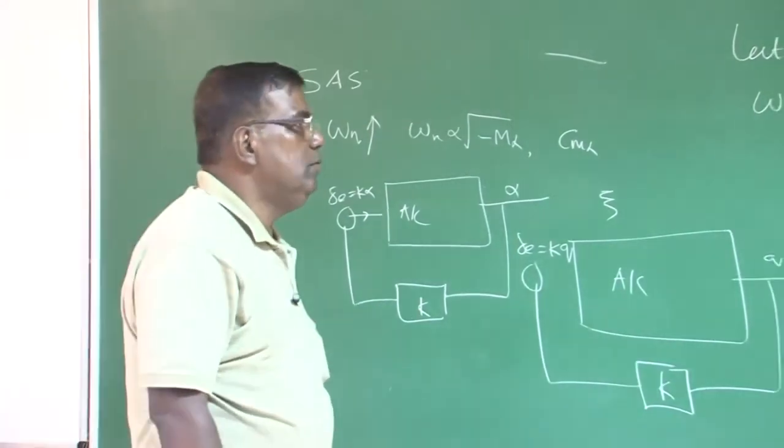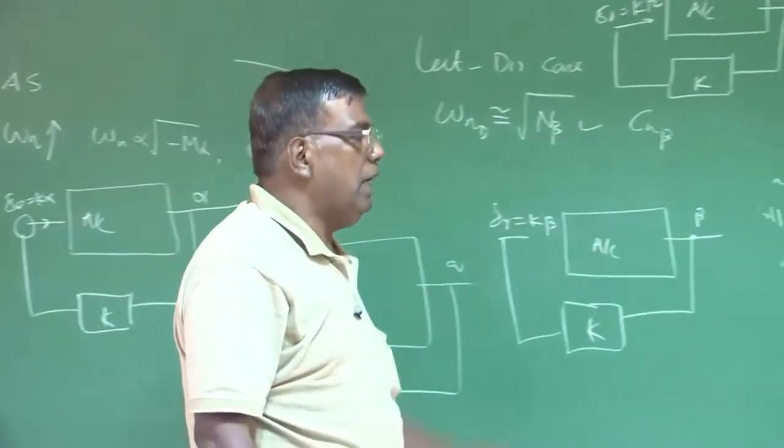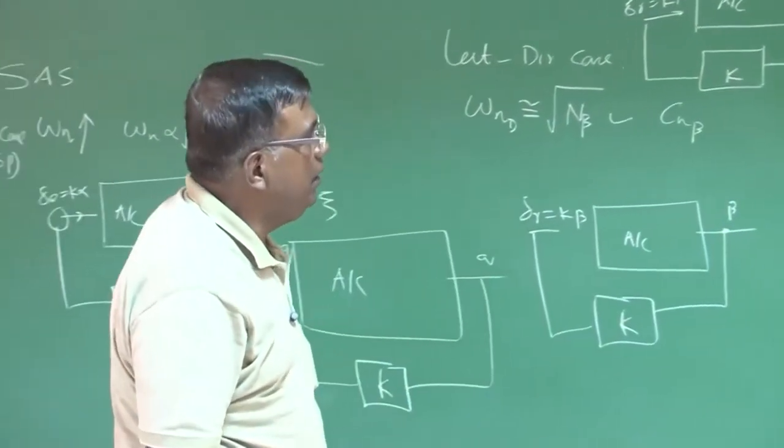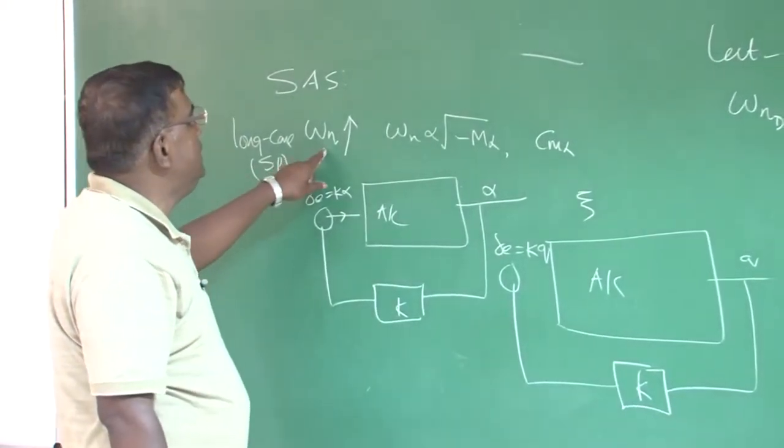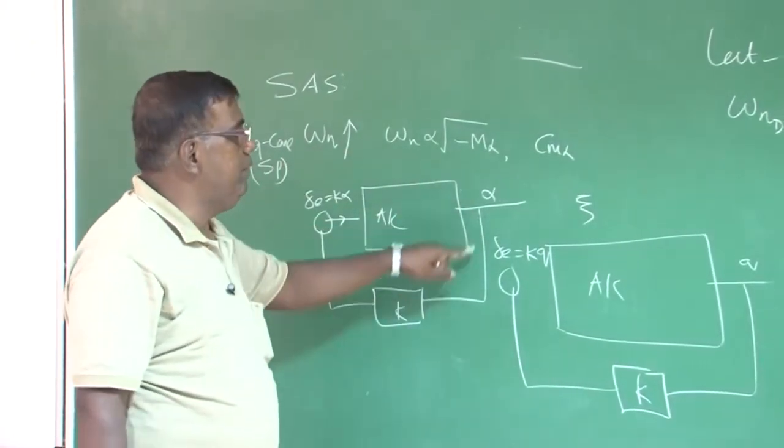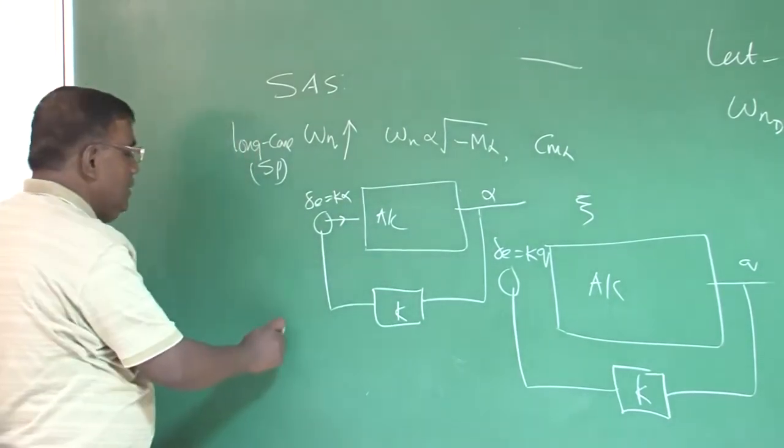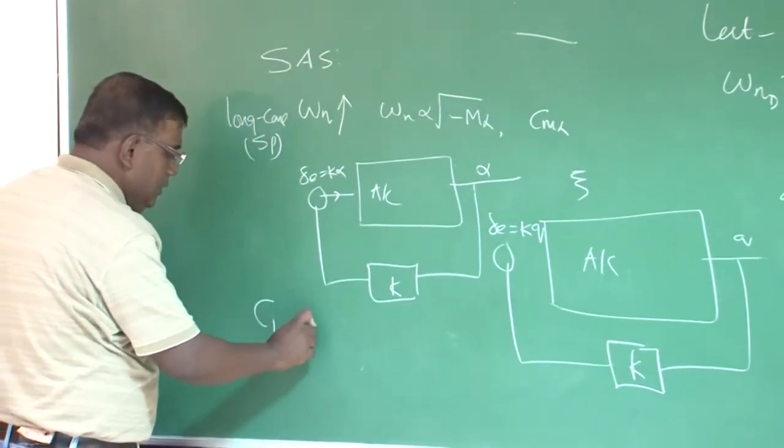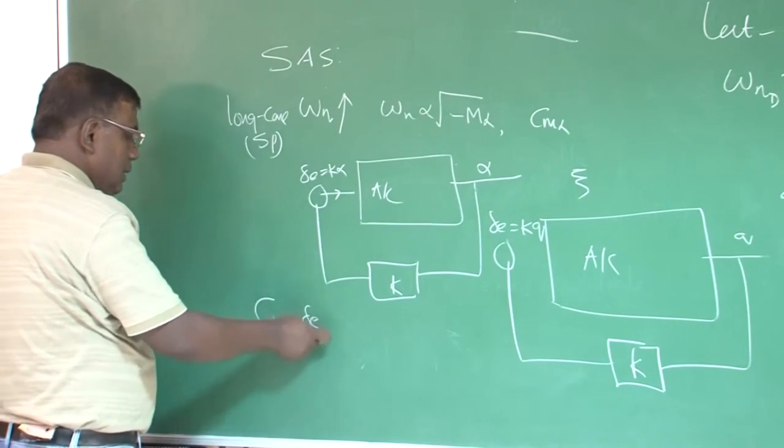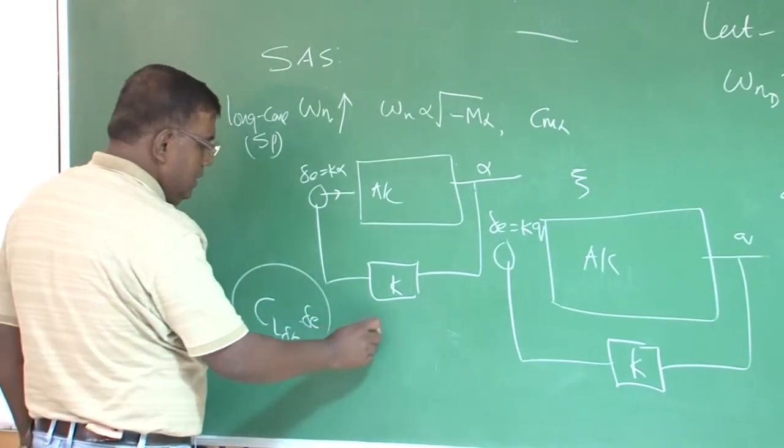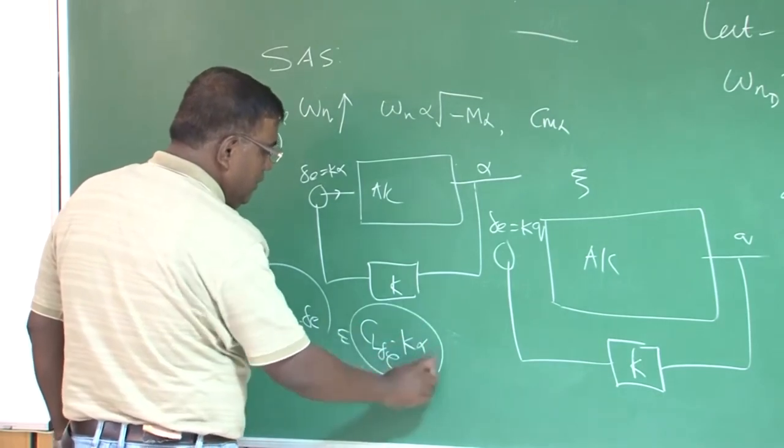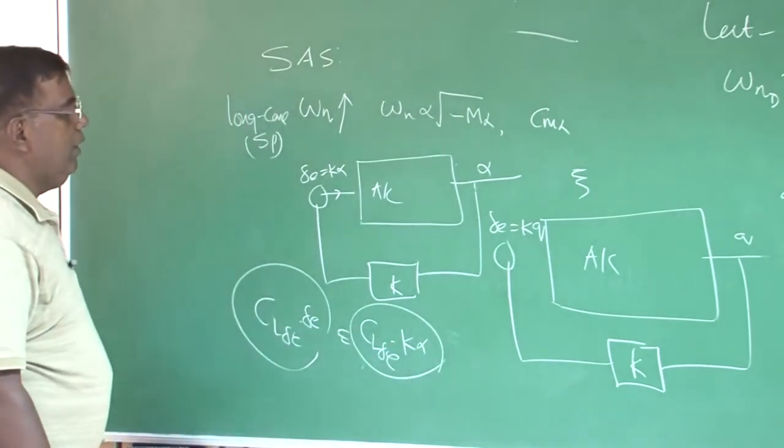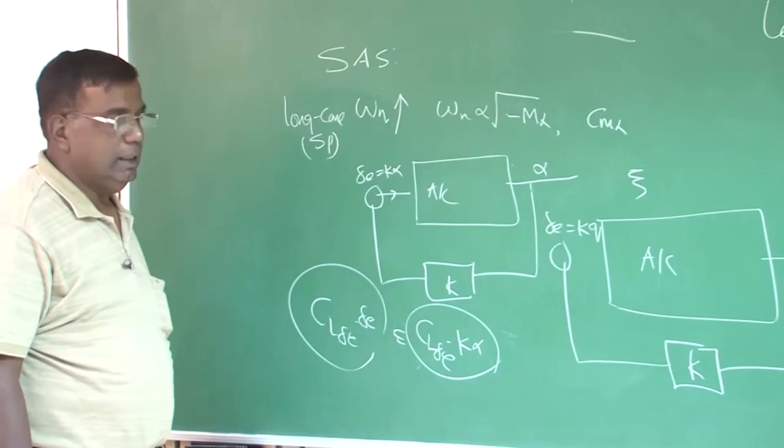Once we do this, we also understand we start from here for designing a stability augmentation system, because you should be careful, when I am changing omega_n by giving alpha feedback, there are other parameters like C_L_delta_e into delta_e. This contribution also gets altered, it becomes C_L_delta_e into k alpha. So effectively, you could see that C_L_alpha of the airplane is changing, right, for that time.